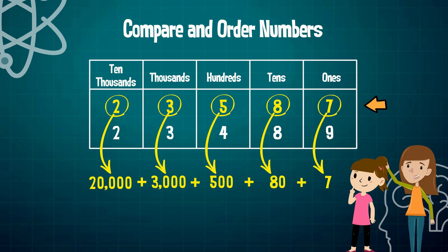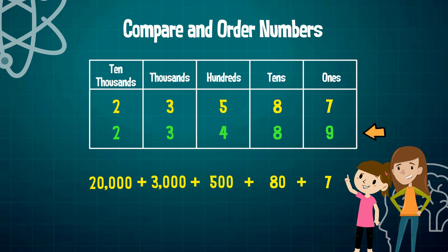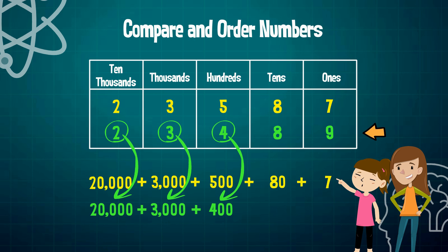Yes. Easy peasy. Okay, go ahead and represent 23,489 in expanded form. Sure. In expanded form, this number would be 20,000 plus 3,000 plus 400 plus 80 plus 9. That was perfect.